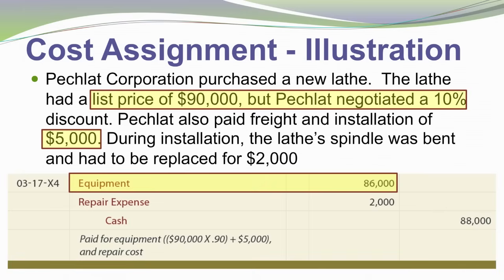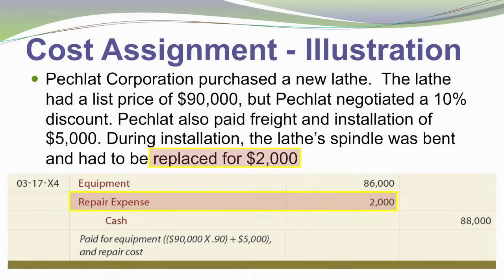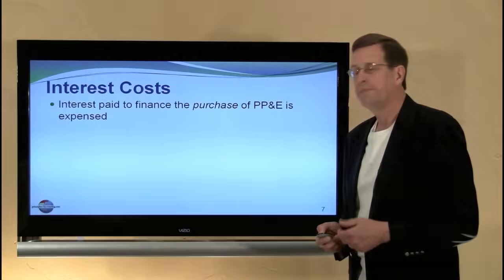We record a debit to equipment of $86,000. However, during installation we damaged the spindle on the lathe and it had to be replaced for $2,000. That was not ordinary and necessary, so we charge that off as repair expense of $2,000. Our total outlay of $88,000 is thus attributed $86,000 to equipment and $2,000 to repair costs.